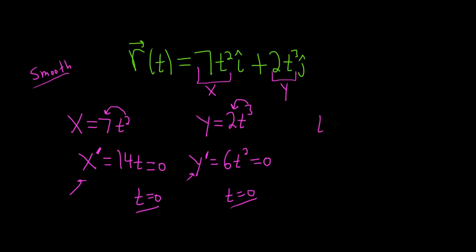So in other words when t is equal to zero it's not smooth. And this is the only time it's not smooth because this is the only time that both of these derivatives are equal to zero at the same time.